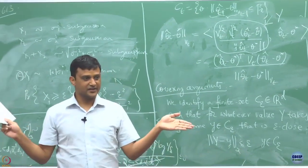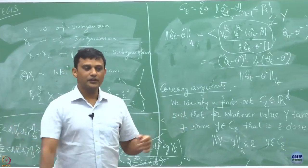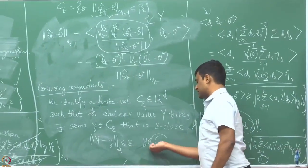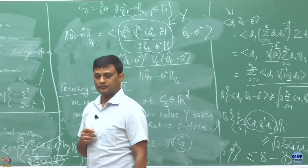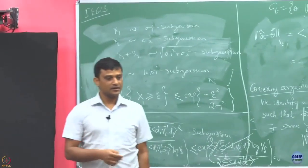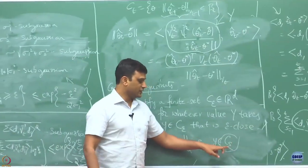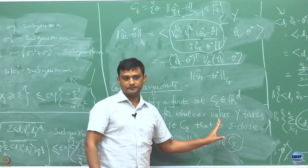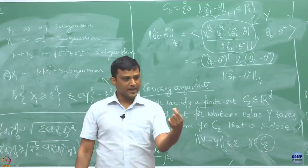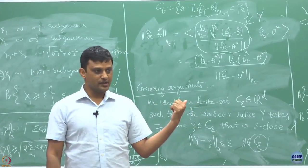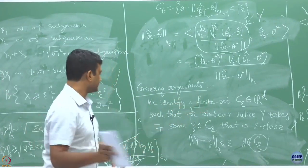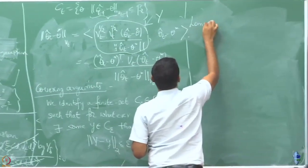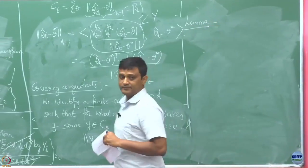That is, whatever value capital Y has taken, there exists a small y from my set C_epsilon such that the difference is going to be less than epsilon. This is what I have done by the discretization. Now the question is whether such a C_epsilon exists, and of course C_epsilon is denoted with a subscript epsilon to mean it depends on the size of epsilon. So naturally if you are expecting a small epsilon, the size of C_epsilon is going to be large. Here is a lemma which says that the existence of such a covering set is guaranteed.